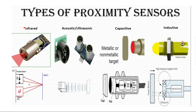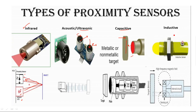Looking at the diagram, the first type shown is infrared — indicating how light is transmitted and collected. This is the infrared LED transmitter, and this is the proximity sensor that detects the reflected signal. For acoustic/ultrasound sensors, ultrasonic signals are released by the transmitter and collected by the receiver. For a capacitive proximity sensor, when an object comes nearer, capacitance builds up because of the conducting plate, and the resultant parameter being measured changes accordingly.